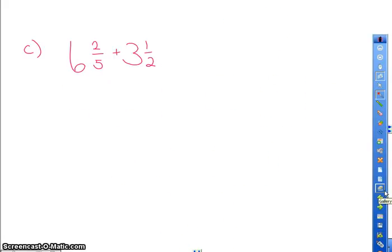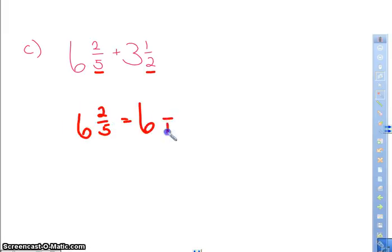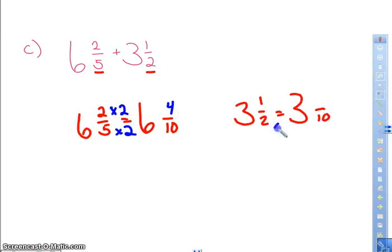6 2/5 plus 3 1/2. So once again, we want a common denominator, and a common number between 5 and 2 is 10. So I'm going to do 6 2/5, knowing I need to have 6 and something over 10. 3 1/2, and once again, I need to have 3 with something over 10 as well. So 5 times 2 is 10, so I'm going to take 2 times 2, which is 4. 2 times 5 is 10. So I'm going to take 1 times 5, which is 5.